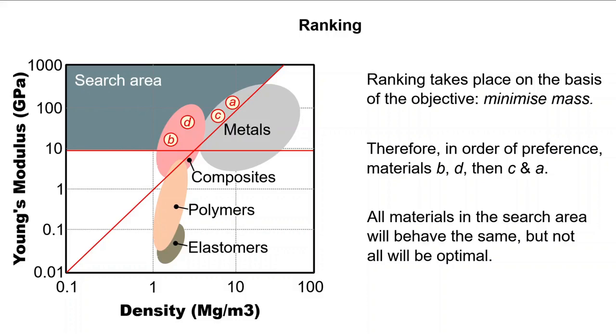If the objective, and not constraint, is to maximize stiffness, then the ranking would run the other way, with A being the best choice down to B. All of the materials which are constrained in the search area will have the same relationship between modulus and density, corresponding to a minimum acceptable modulus.